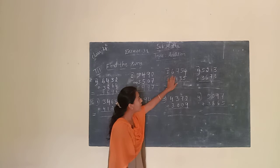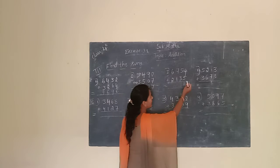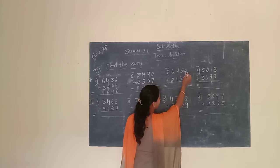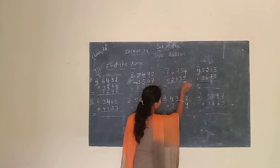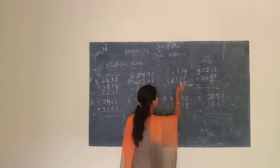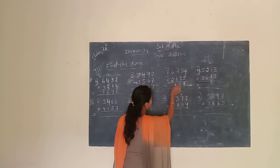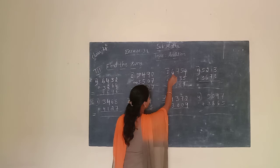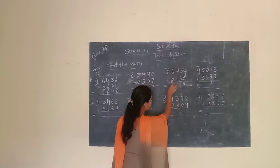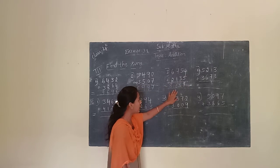Give one more example. The given number is 6,754 plus 2,135. Now we have to add. First, we have to start at the unit place. Unit place is 4 and 5. 4 plus 5 is 9. We have to write 9. Next, move to the 10th place. 10th place is 5 and 3. 5 plus 3 is 8. We have to write 8. Next, move to the 100th place. 100th place is 7 plus 1. 7 plus 1 is 8. We have to write 8. Next, move to the 1000th place. 1000th place is 6 and 2. 6 plus 2 is 8. We have to write 8. So 6,754 plus 2,135 equals 8,889.